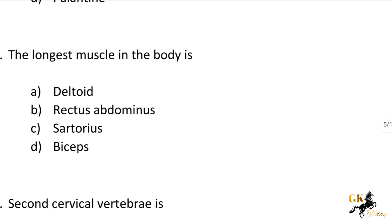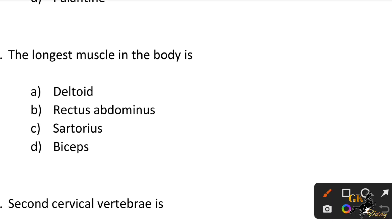Next question: The longest muscle in the body is — Option A: Deltoid. Option B: Rectus abdominis. Option C: Sartorius. Option D: Biceps. The longest muscle in the body is Sartorius.